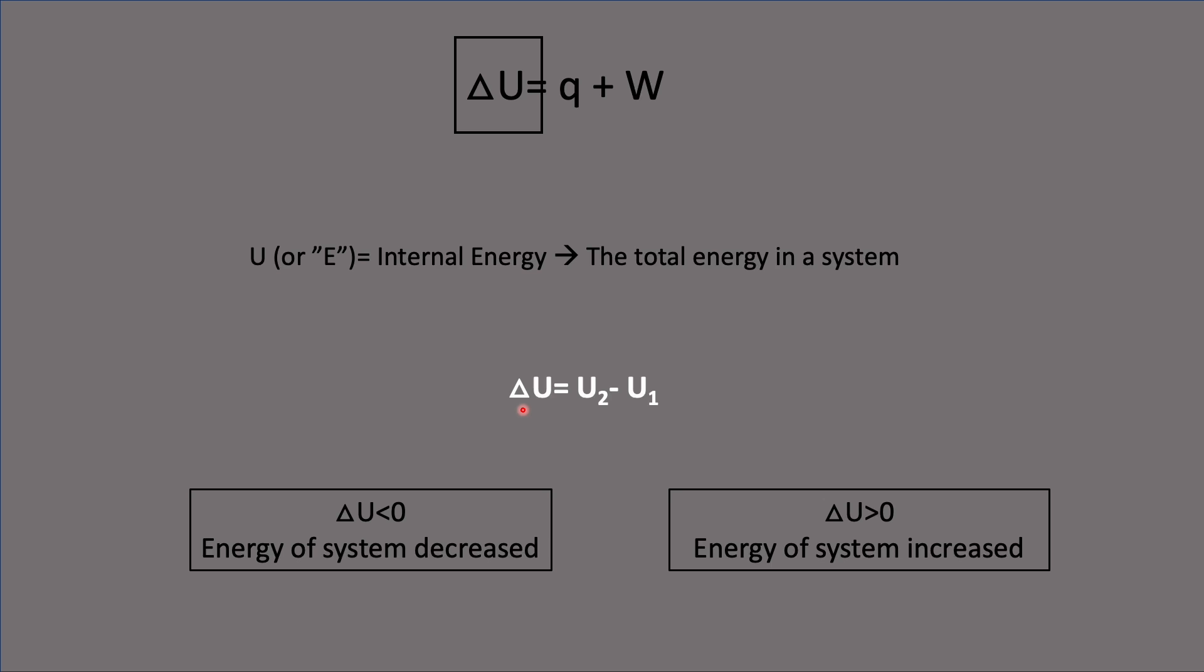We have two cases that we want to look at when we're talking about change in internal energy. If we have a change in internal energy that is negative, less than zero, the energy of the system has decreased. If we have a change in internal energy that is positive or greater than zero, we have an energy of the system that's increased.